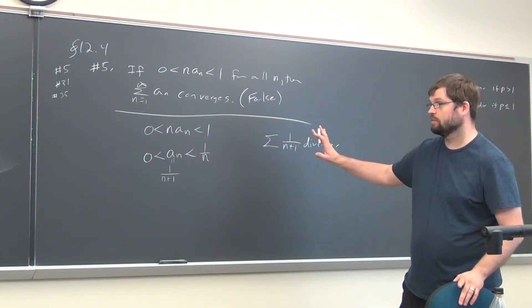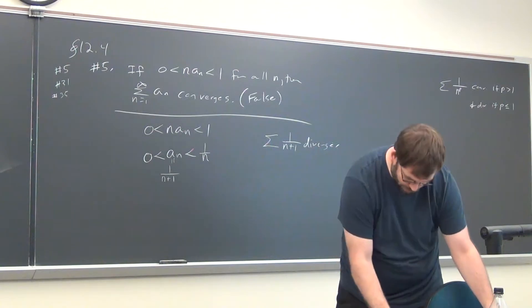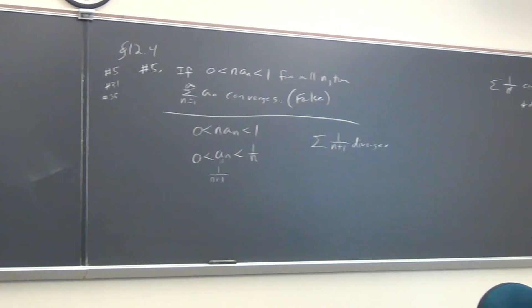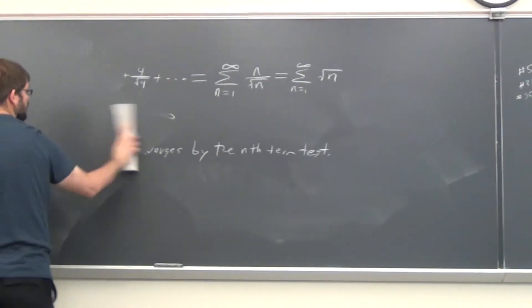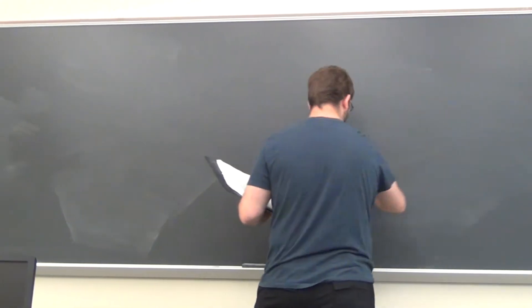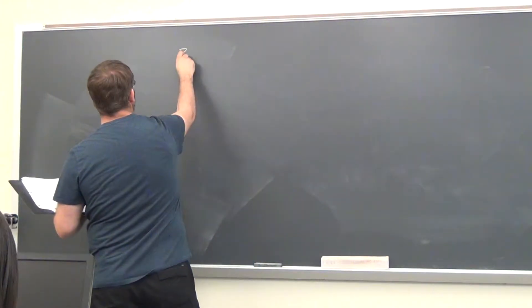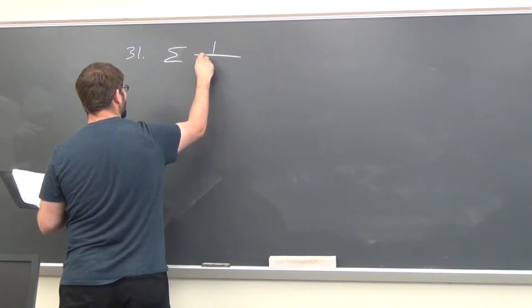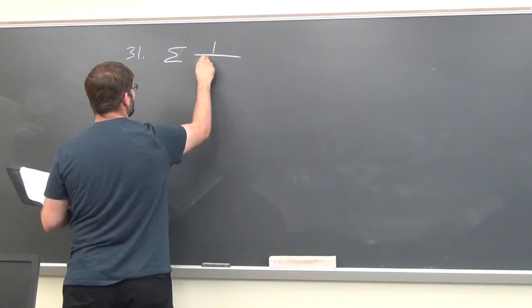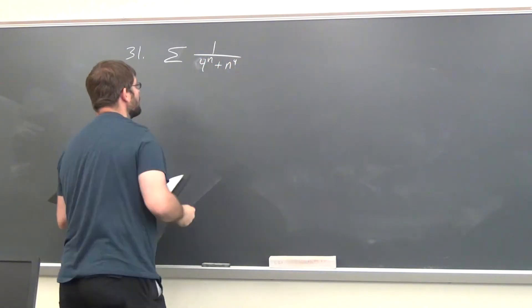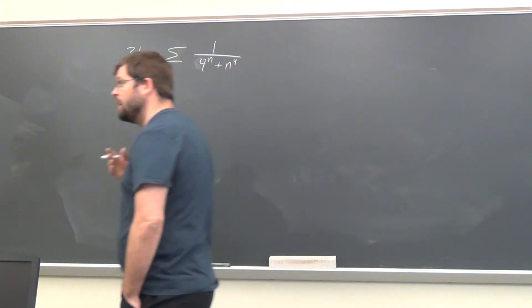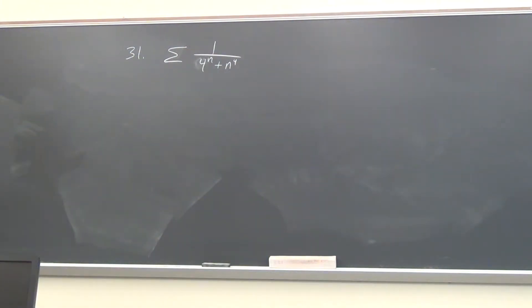Any other questions on this one? Let's see the next one. I'm going to just leave off the bounds here. Number 4: 1 over 4 to the n plus n to the fourth.